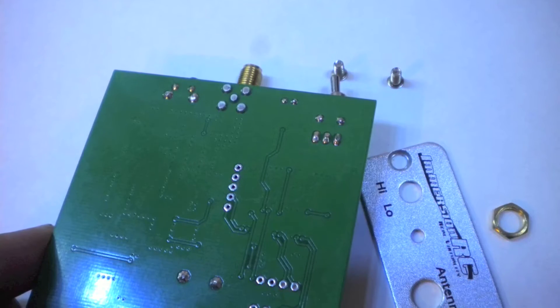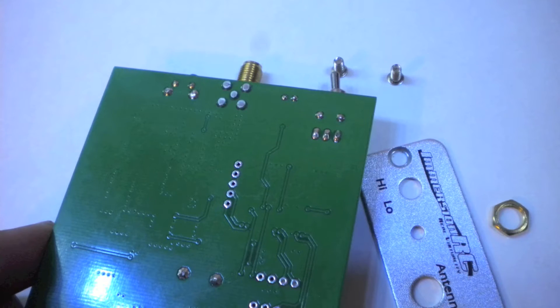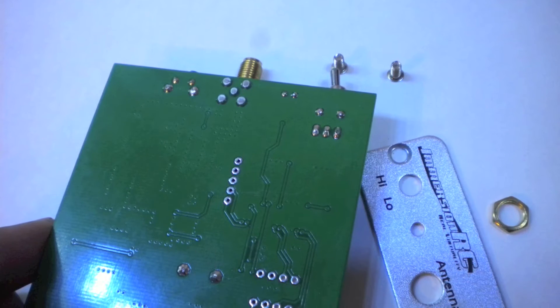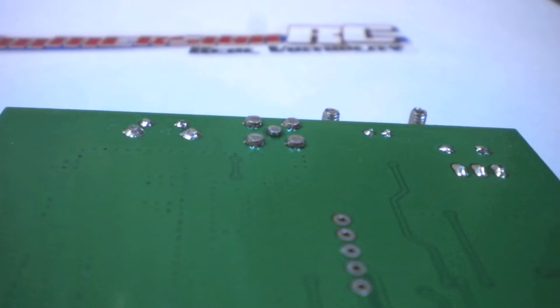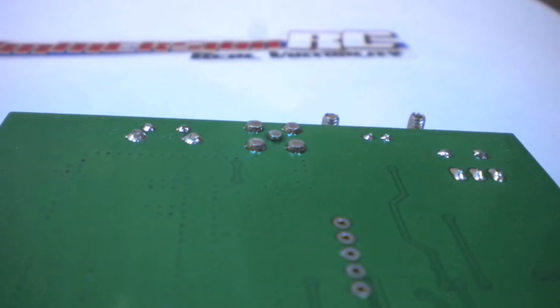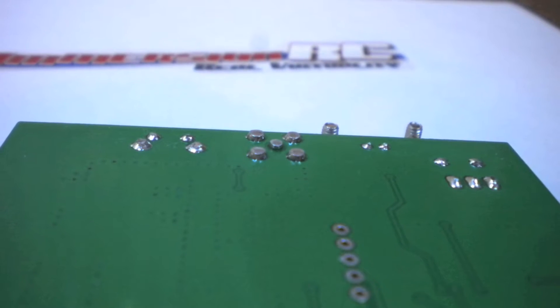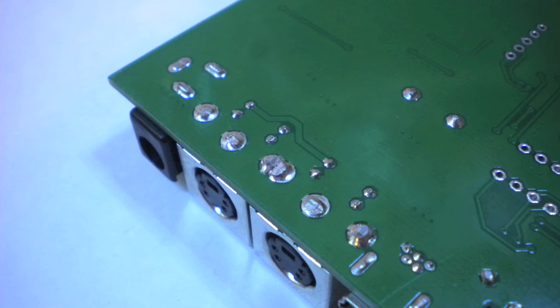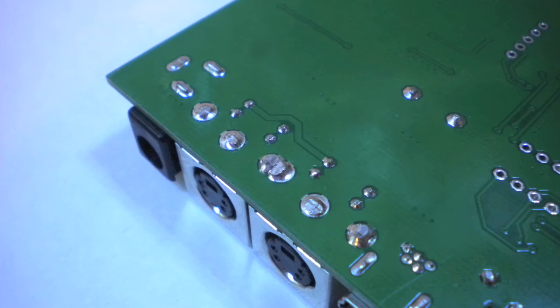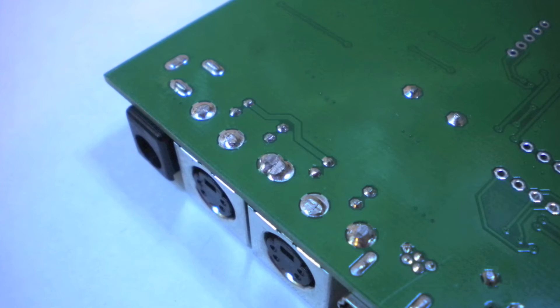Now it's time to inspect the board to determine if your board has this particular fault. Examine the solder joints on the back of the board, especially the joints for the SMA RF antenna connector, the high-low power switch, the RC input jack, and the external power jack.